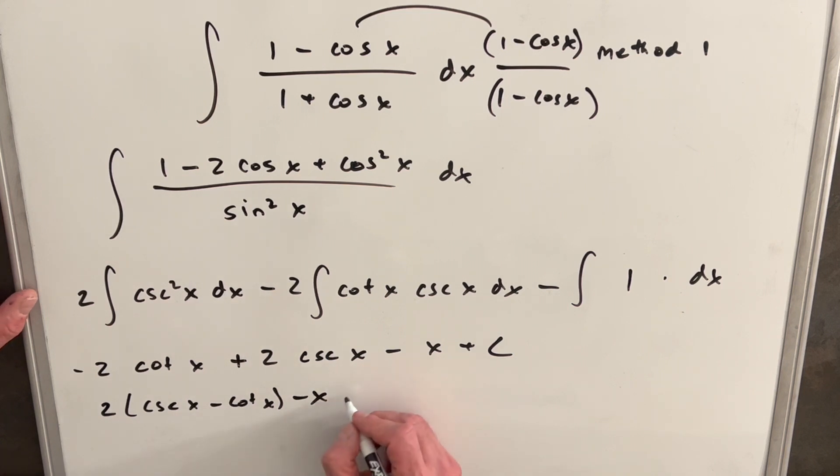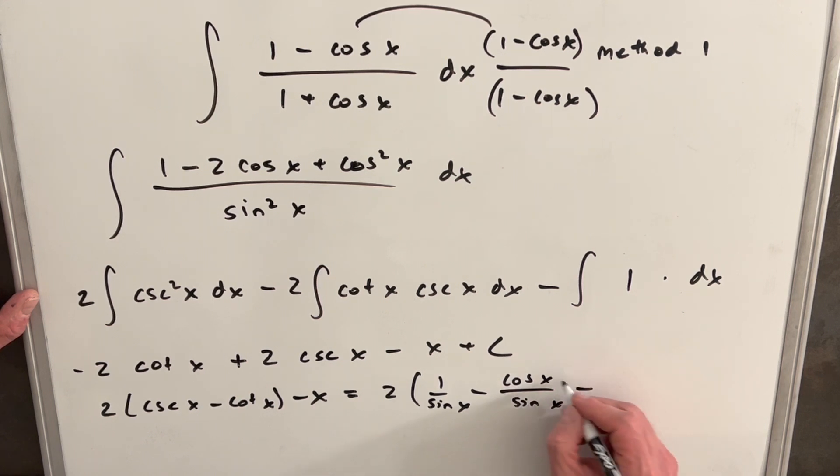But then I'm going to write this in terms of sines and cosines. So we're going to have 2 times 1 over sin x minus cos x over sin x minus x. So then finally, I'm going to write this with the same denominator: 2 times (1 minus cos x) over sin x minus x.